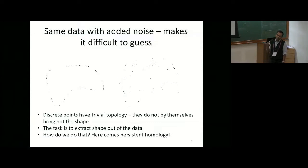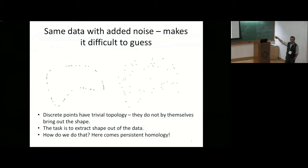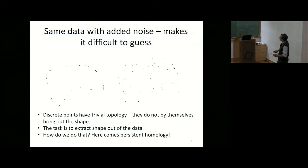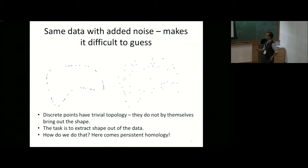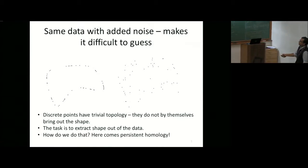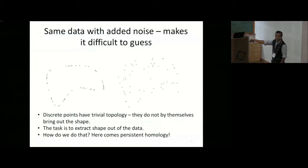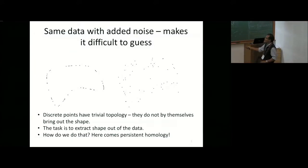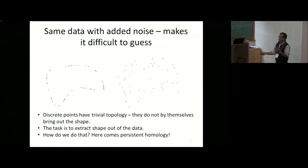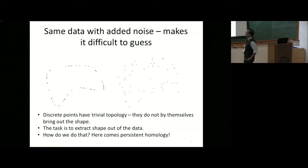Discrete points have trivial topology. If you look at these points without the connecting curve, it's all just points — it has very trivial topology. They do not, by themselves, bring out the shape. You have to make meaning out of it — that's what human beings are good at. The task is to mathematically extract the shape out of the data. That's where persistent homology comes in.